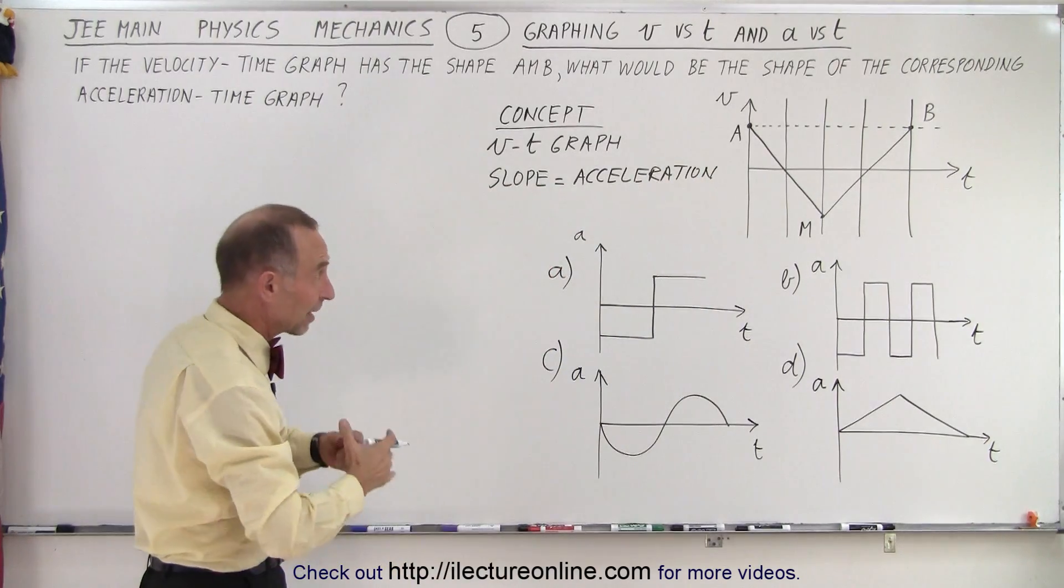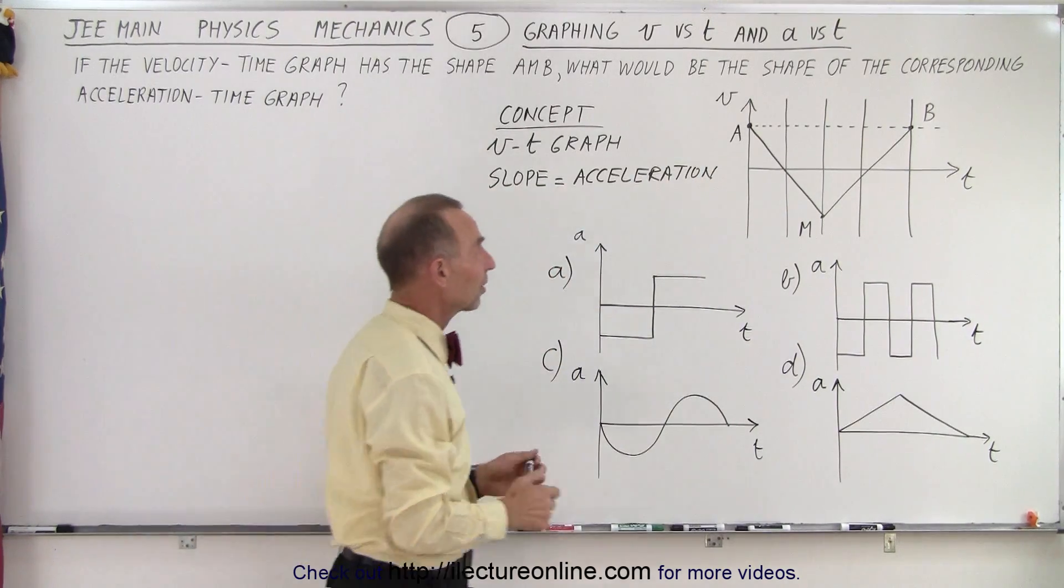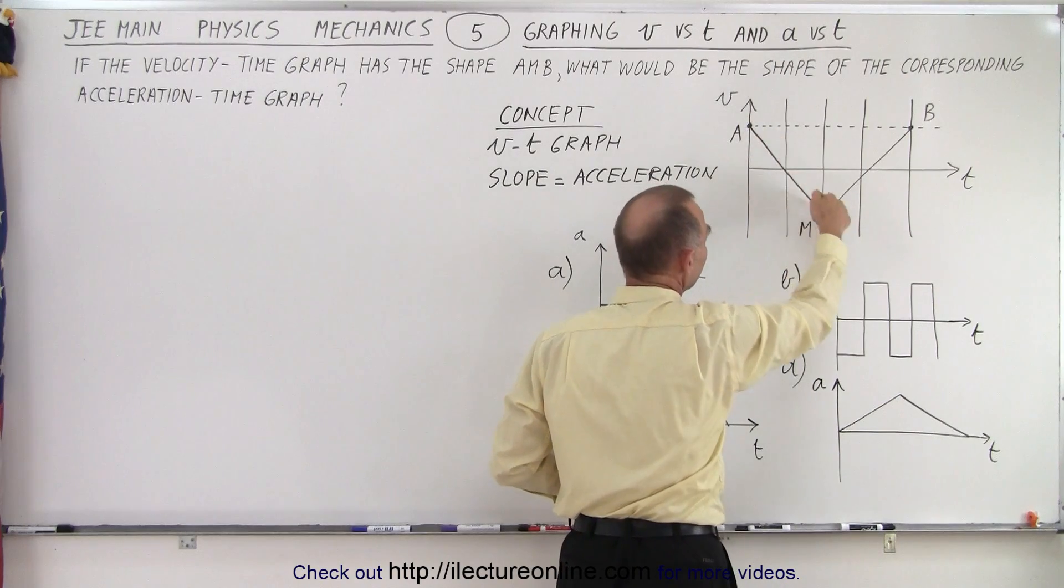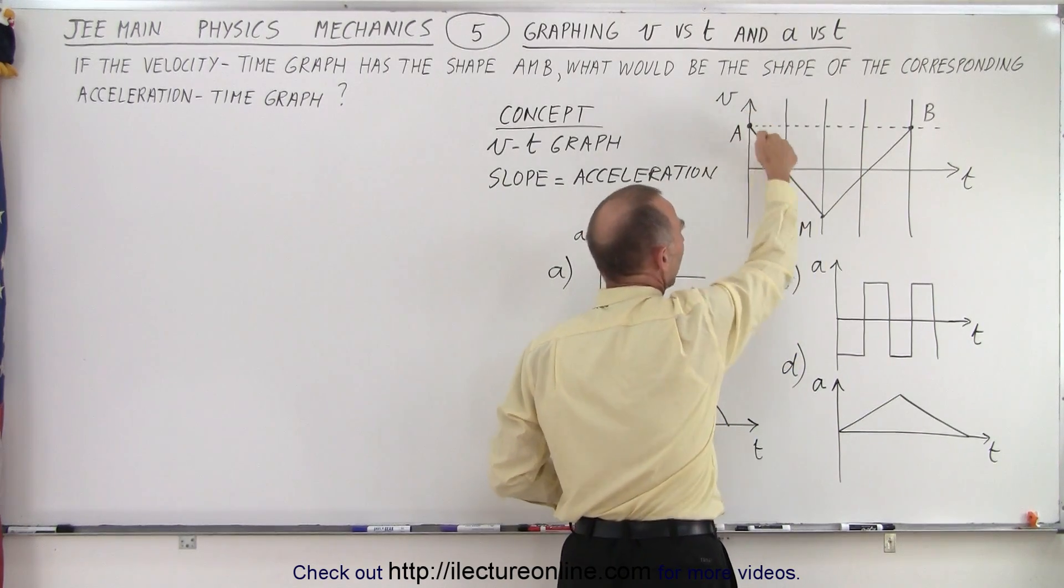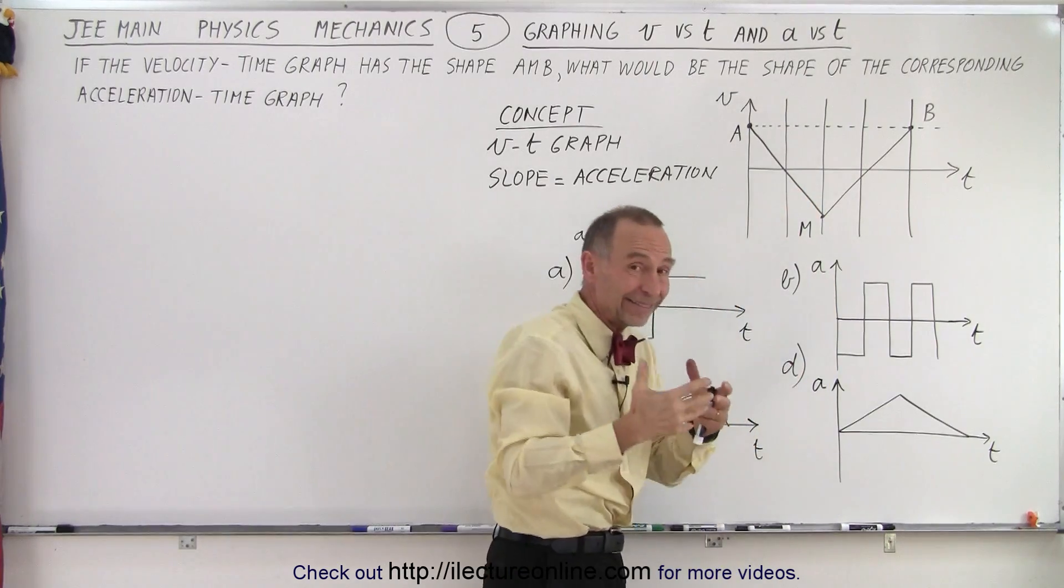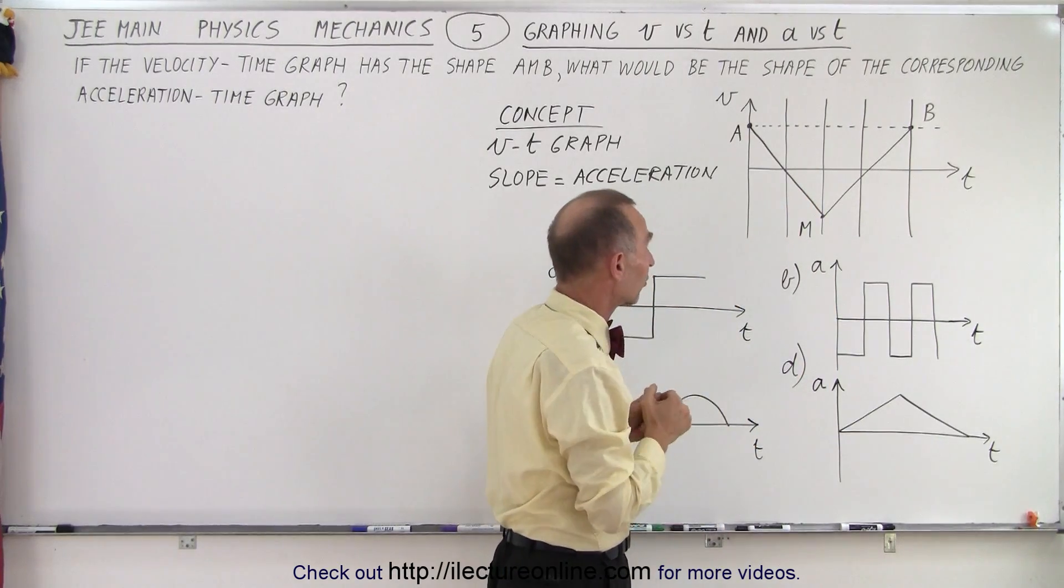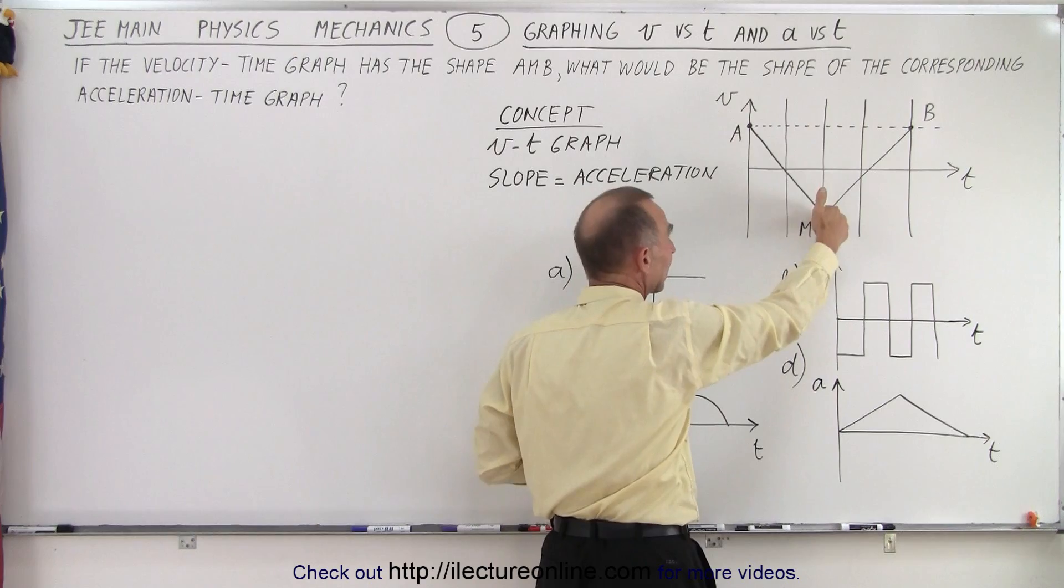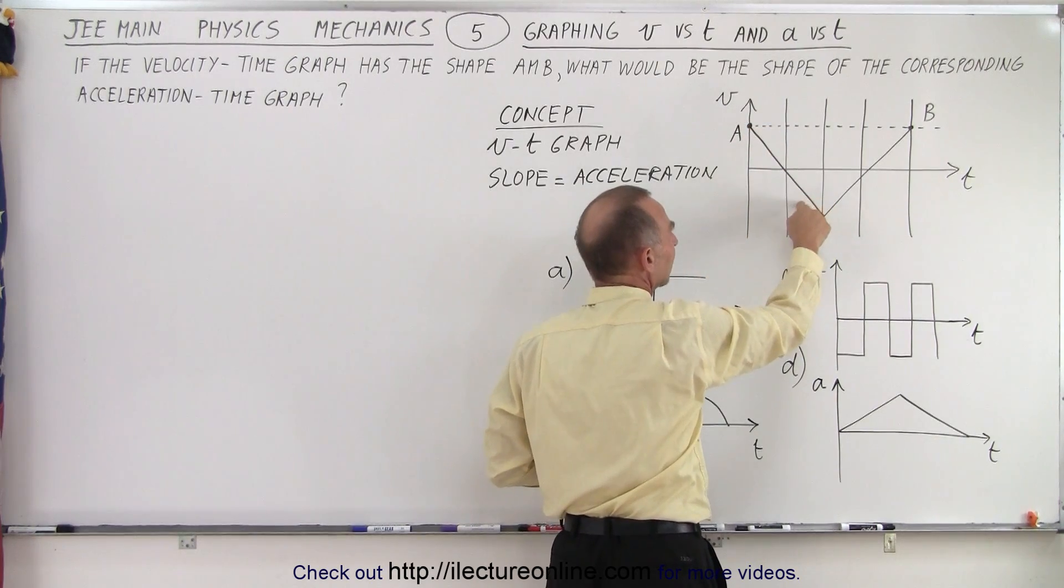If you understand that concept, it's an easy problem, because notice that we have a straight line coming down at a constant slope. That means that the slope, meaning the acceleration, must also be constant. And since the slope is negative, this requires a negative acceleration.